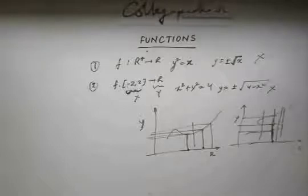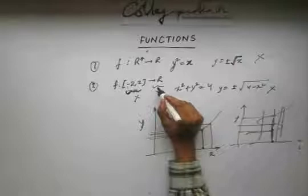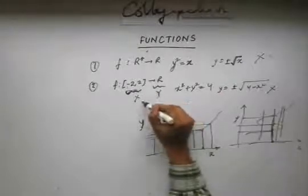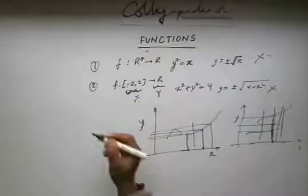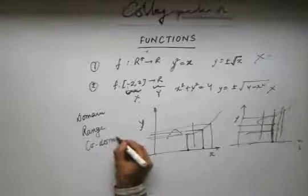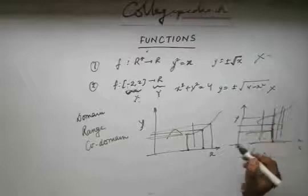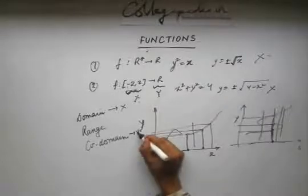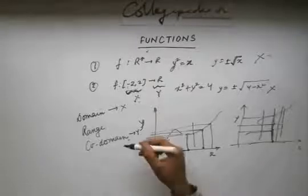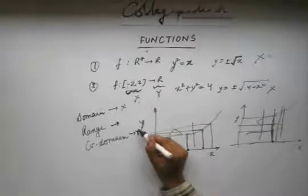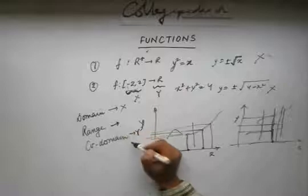Now, we have talked a lot about what a function is. Let's understand: we have talked about the elements in set x and the elements in set y, which are the images of set x. So, we have something called domain and range of a function, and also something like codomain. Domain is nothing but the set x itself. Codomain is nothing but the set y itself. And the elements which are the images of the elements of set x are in the range. So codomain consists of all the elements of set y, but range consists of only those elements of set y which are images.